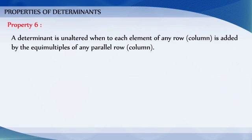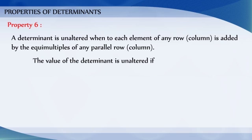Property 6: If to each element of any row or column of a determinant the equimultiples of corresponding elements of another row or column are added, then the value of the determinant remains the same. That is, the value of the determinant remains the same if we apply the operation Ri → Ri + k·Rj, or Ci → Ci + k·Cj.